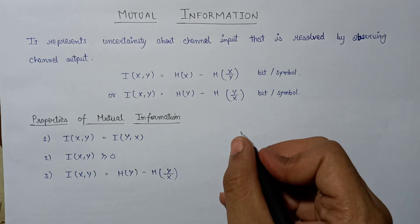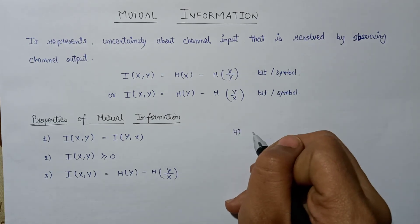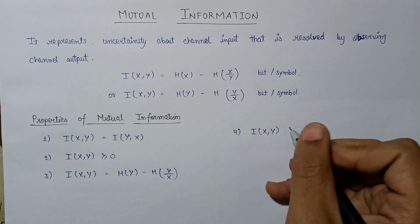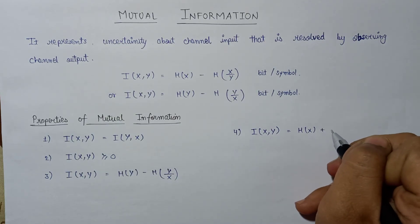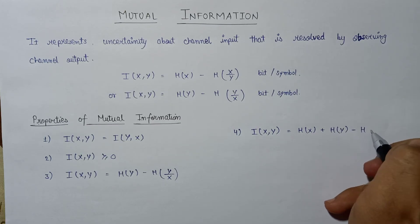The fourth property is I(x,y) equals H(x) plus H(y) minus H(x,y).